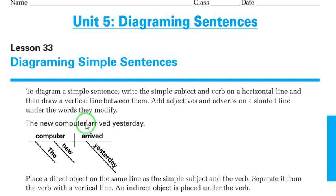First of all, I put the slash before the verb as usual, and then I look before the slash for the simple subject. Computer is the simple subject. I write it on the horizontal line. Then I go to the verb. The verb is arrived and I put it next to it, and I separate them with a vertical line.